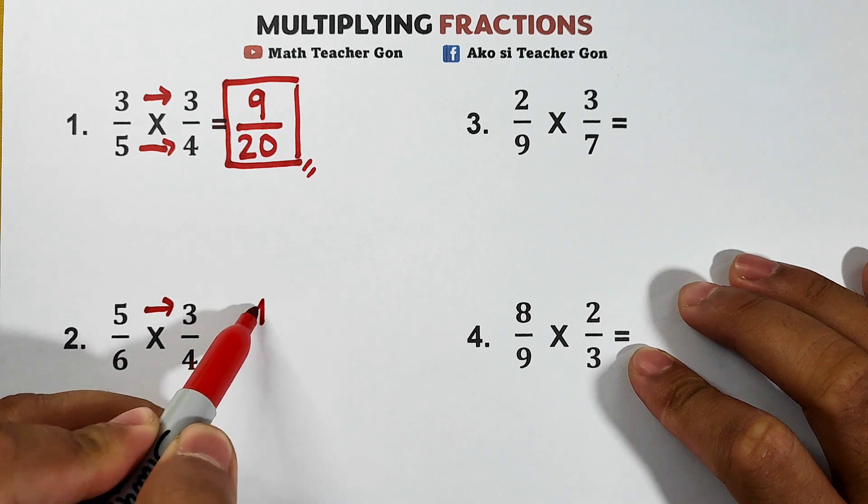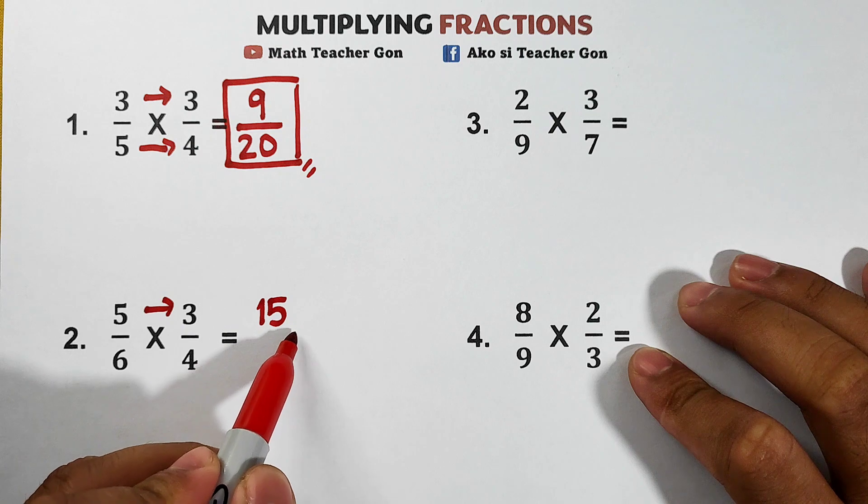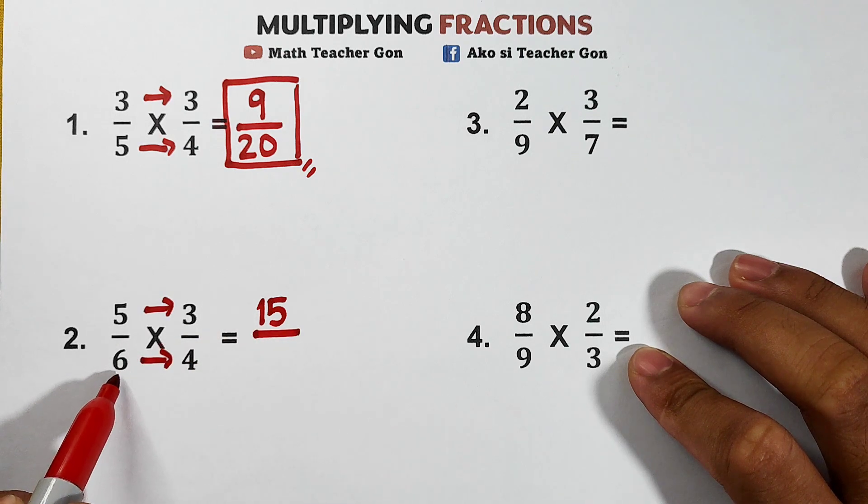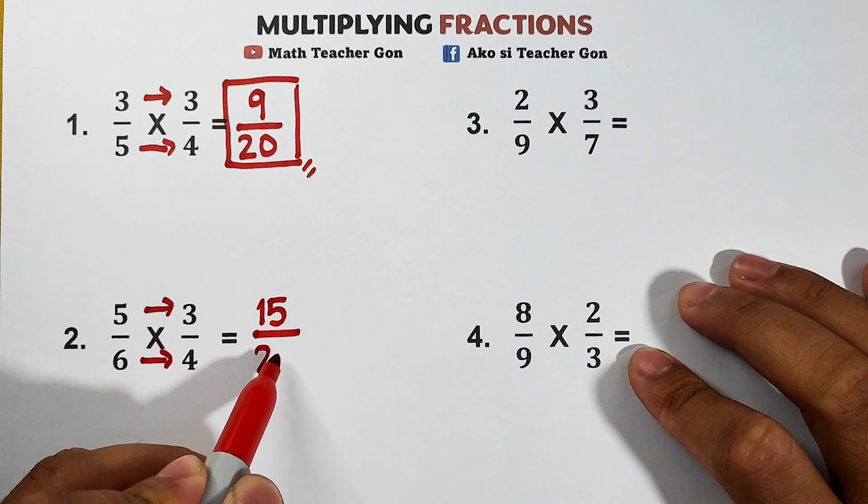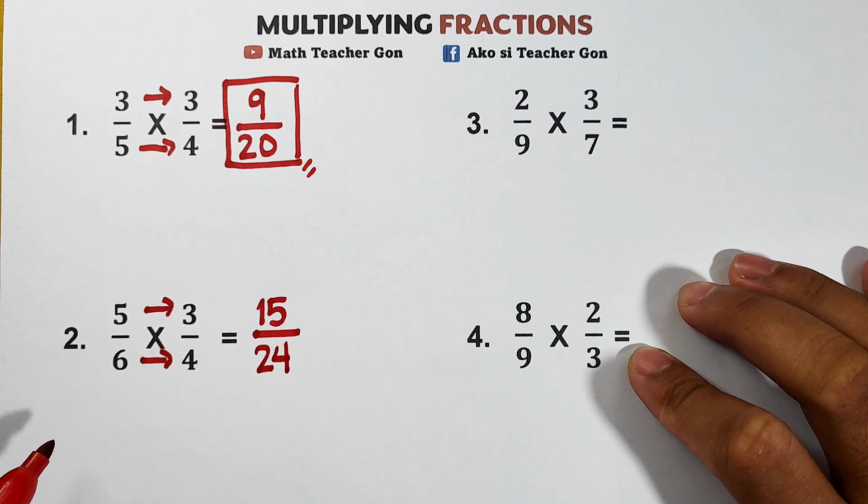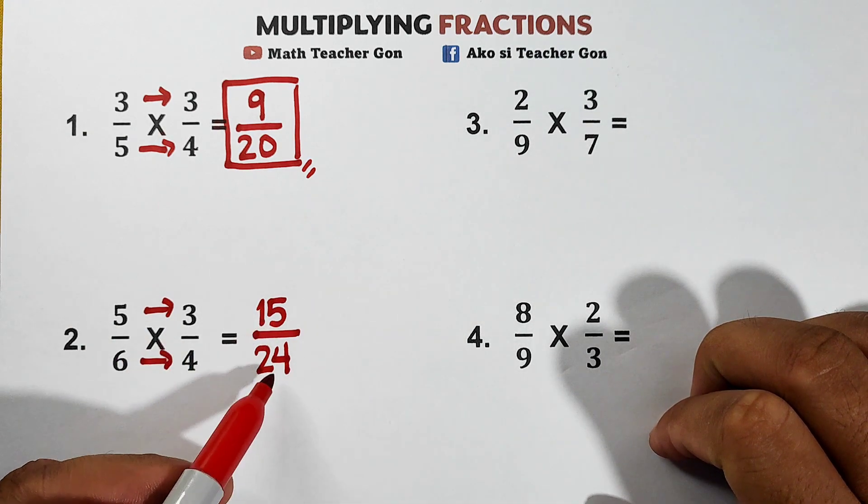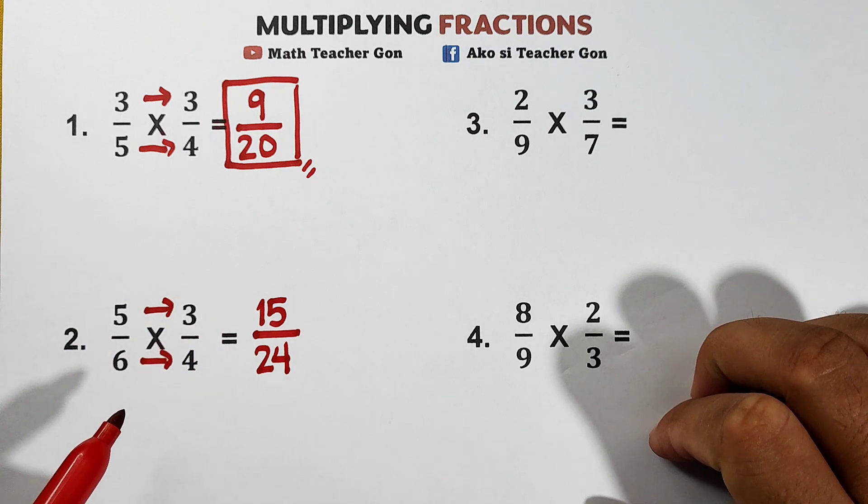5 times 3 is 15 over 6 times 4, which is equal to 24. And we need to know if we can still simplify 15 and 24. As you can see, they have a GCF which is equal to what? The answer is 3.